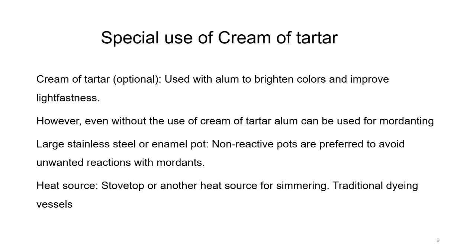Cream of tartar is used with alum to brighten colors and improve light fastness, as seen in the previous lecture. However, even without cream of tartar, alum can be used for mordanting; but using it together makes the color more lustrous, intensified, and improves light fastness. Large stainless steel or enamel pots are preferred to avoid unwanted reactions with mordants. A stove top or any other heating source for simmering is also used, as in traditional dyeing vessels.